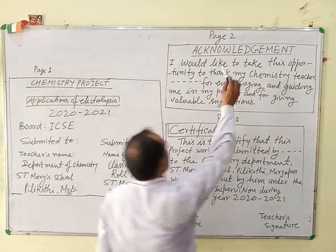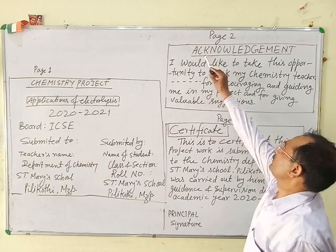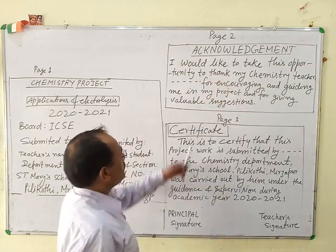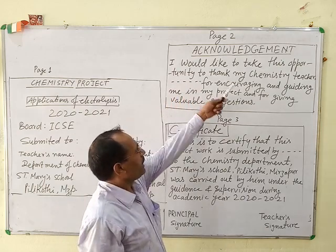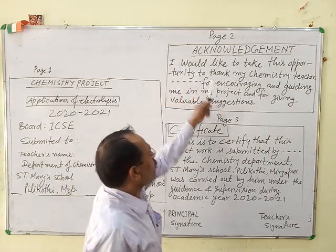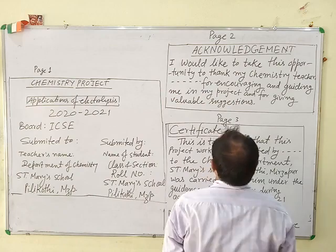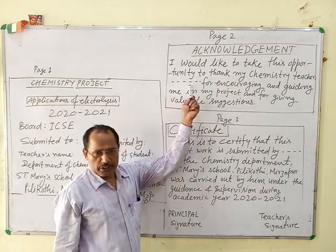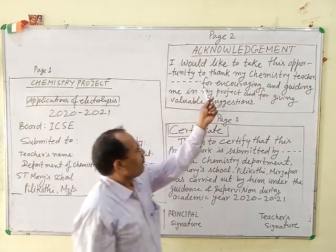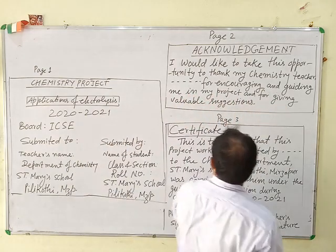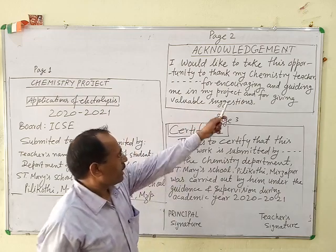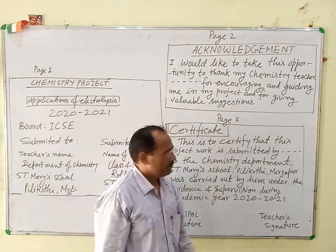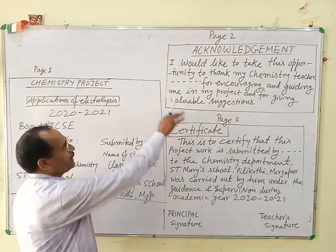On the second page, write the acknowledgement. You can write: 'I would like to take this opportunity to thank my chemistry teacher' — here write the name of the chemistry teacher — 'for guiding me in my project and giving valuable suggestions.' This is your page number two.